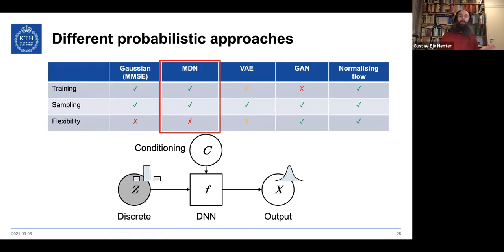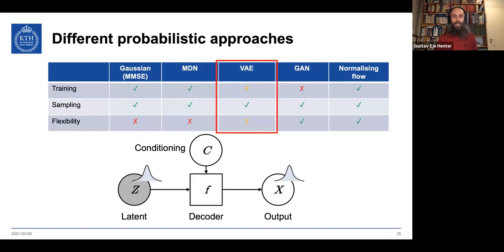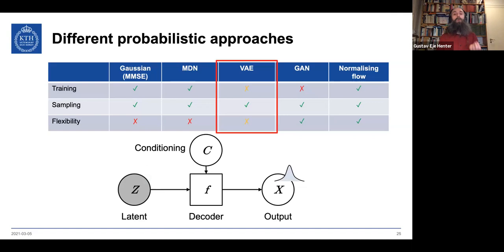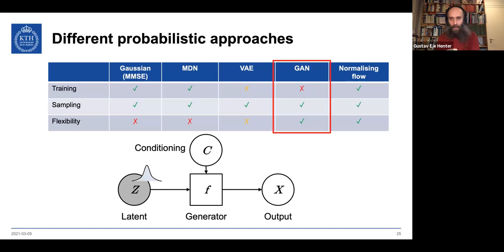A variational autoencoder is more interesting — a continuous latent distribution mapped non-linearly to potentially complex, non-Gaussian output. Unfortunately, VAEs can't maximize the likelihood directly, and they suffer from 'posterior collapse,' where the model ignores the latent variable and just relies on Gaussian noise. GANs work because all variation is in the latent space and non-linearly transformed, but they're hard to train — finding a Nash equilibrium is very difficult.